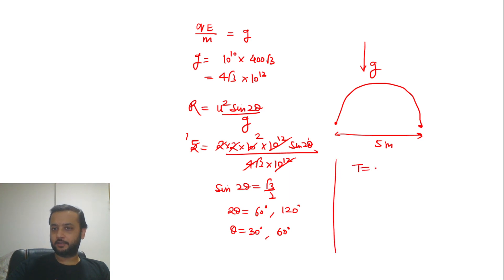For time of flight, we can find it from 2u sin θ / g. So 2 into u ki value question me thi 2 root 10, let's say theta is 30° so sin θ ka value half ho jayegi, 2u×10⁶ bhi multiply ho raha hai. So 2u sin θ / g, g ki value kitni hai: 4 root 3 into 10 to the power 12.